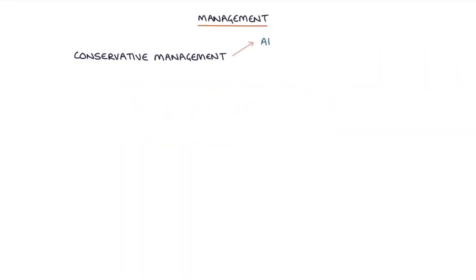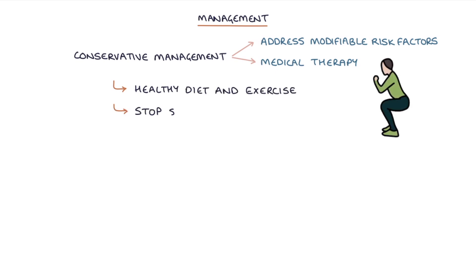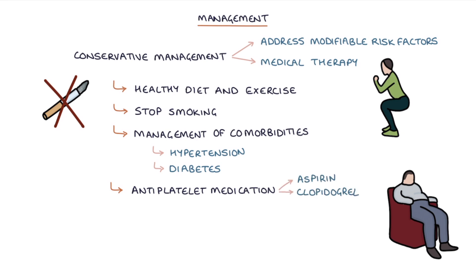Conservative management involves addressing modifiable risk factors and medical therapy. This involves having a healthy diet and exercise, stopping smoking, good management of comorbidities such as hypertension and diabetes, antiplatelet medications such as aspirin, clopidogrel, or ticagrelor, and lipid-lowering medications such as atorvastatin.